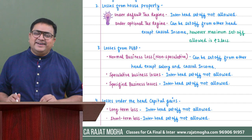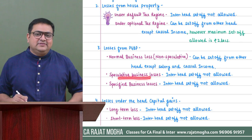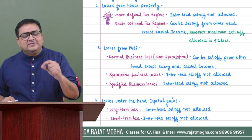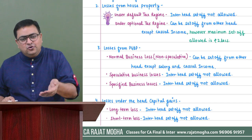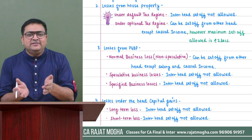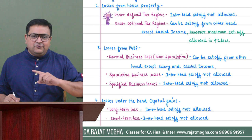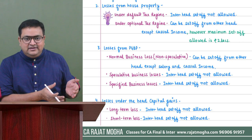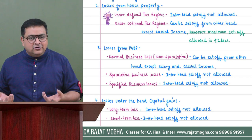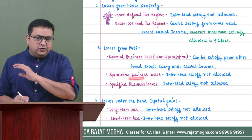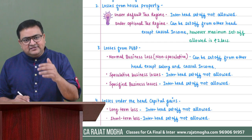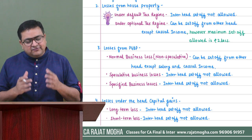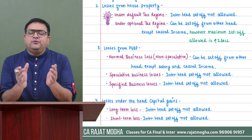If the PGBP loss is specifically from a speculative business, it cannot be set off from any other head at all, because there is already a restriction within the same head — speculative business losses can only be set off from speculative business profits. Similarly, specified business losses can only be set off among those 14 family members. There is restriction in the same head itself.